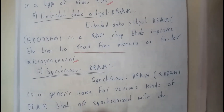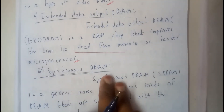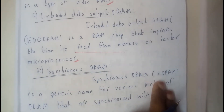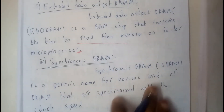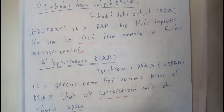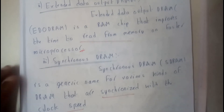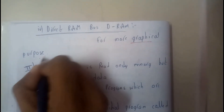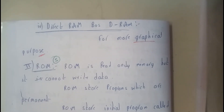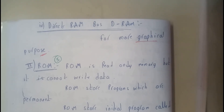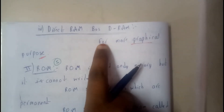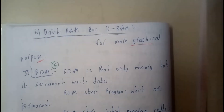Synchronous DRAM, known as SDRAM, is a generic name for a kind of RAM that works synchronously within the clock speed. The fourth type is Direct Rambus DRAM, which is mainly used for graphical purposes — for example, when running multiple graphics-intensive software such as AutoCAD used by civil engineers to construct building models.